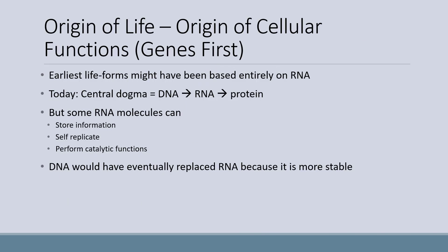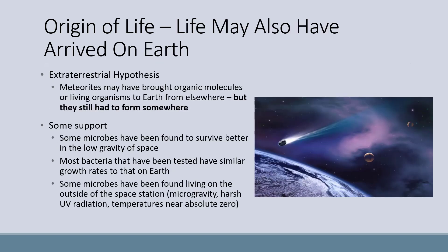The earliest life forms might have been based entirely on RNA. Today, every living organism follows the central dogma — DNA to RNA to protein. But some RNA molecules can store information, self-replicate, and perform catalytic functions. DNA would have eventually replaced RNA because it is more stable, but early life may have just followed the process of RNA to protein. It is also entirely possible that life did not evolve on Earth but arrived on Earth — this is known as the extraterrestrial hypothesis.